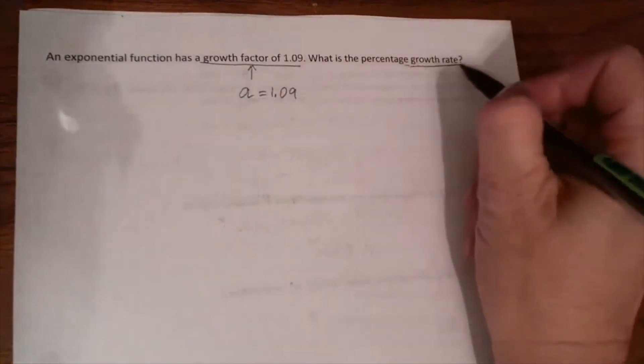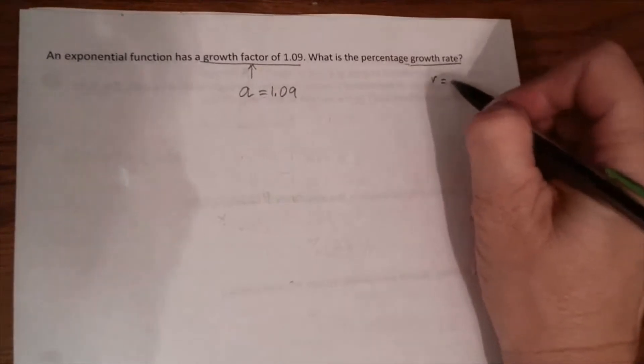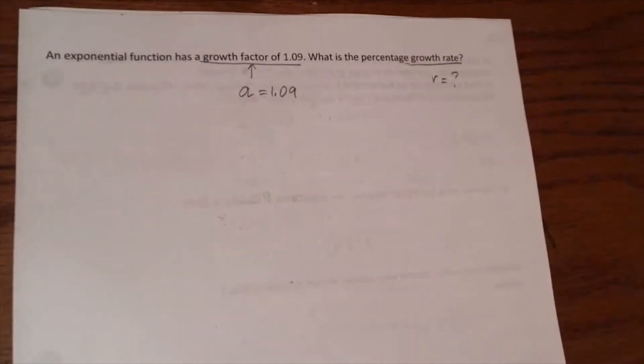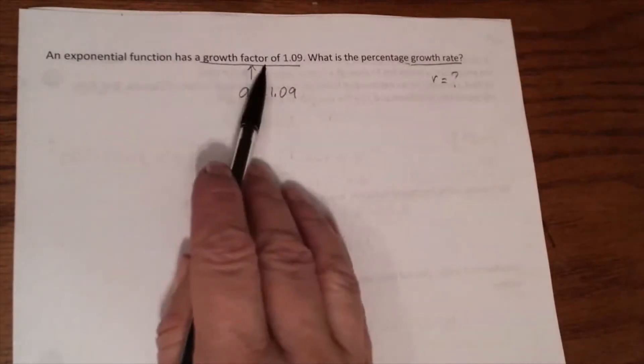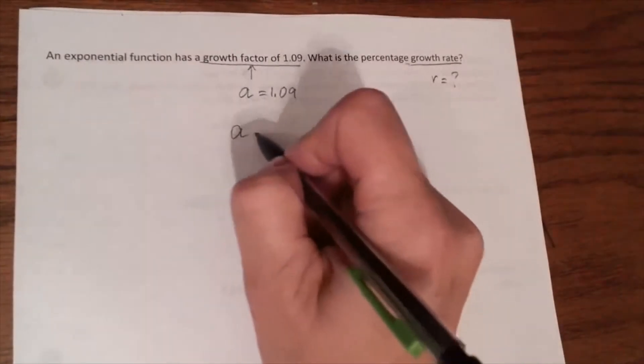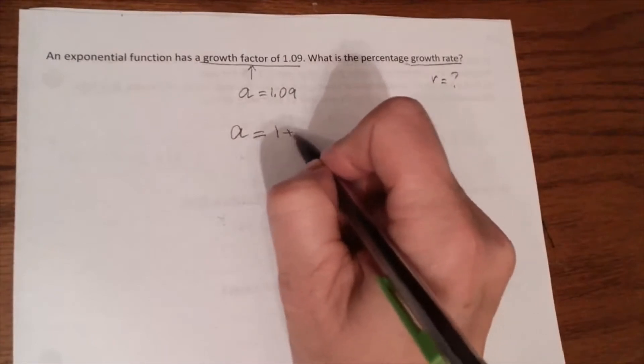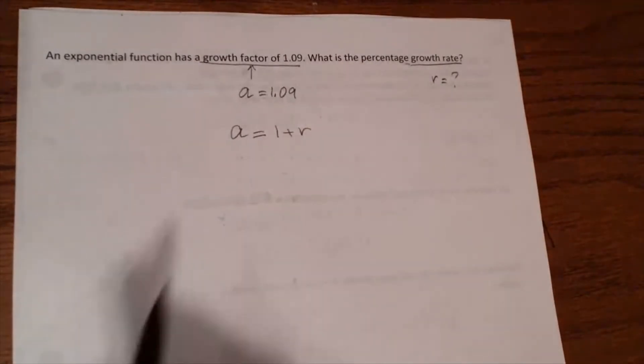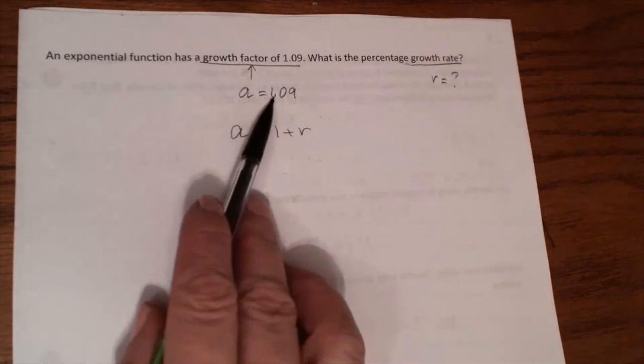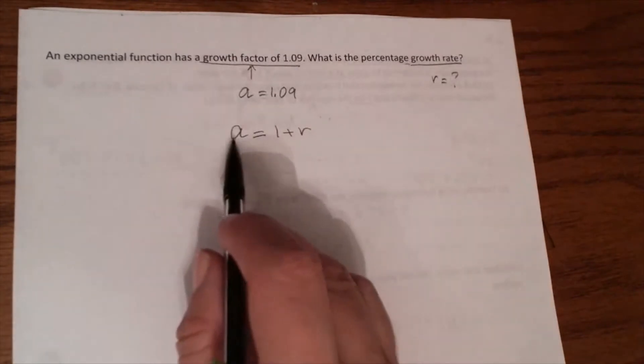Growth factor is an important word here. It means a equals 1.09. Growth rate is R and you need to find R. Because it's a growth factor, you need to use the formula a equals 1 plus R.